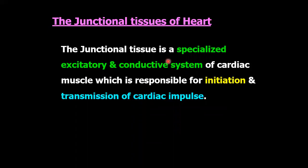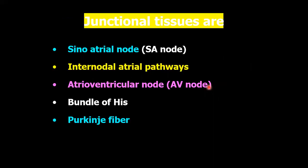So what do we mean by Junctional Tissues? The Junctional Tissues are the specialized excitatory and conductive system of cardiac muscle which is responsible for the initiation and transmission of cardiac impulse. Junctional Tissues comprises the sino-atrial node or SA node, internodal atrial pathways, atrioventricular node, bundle of His, and Purkinje fibers.